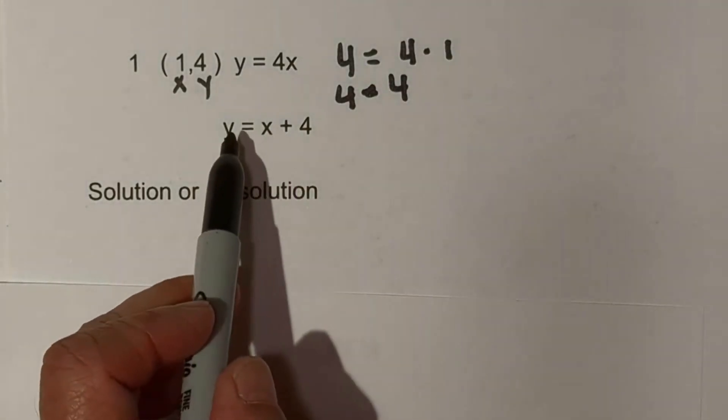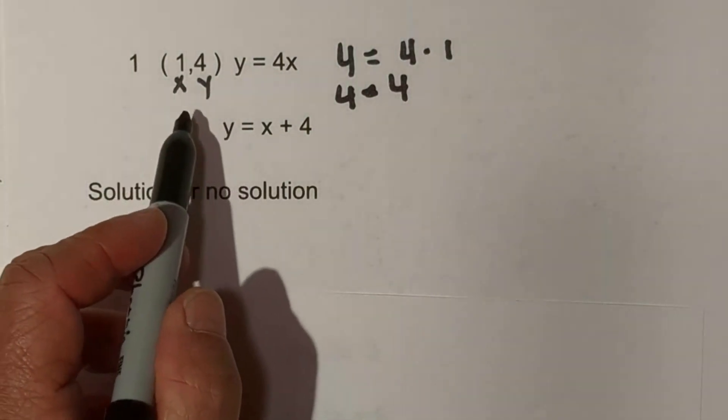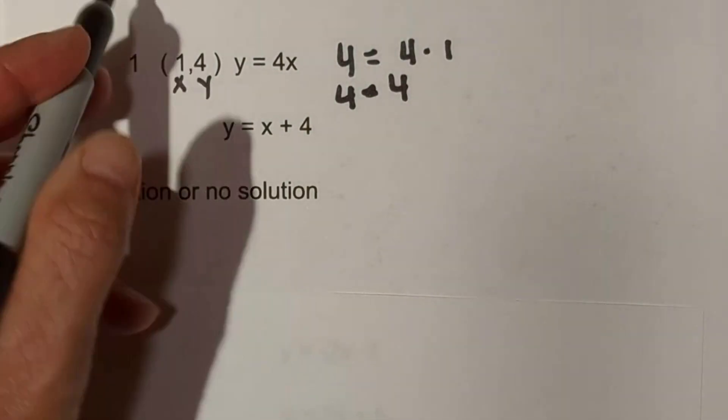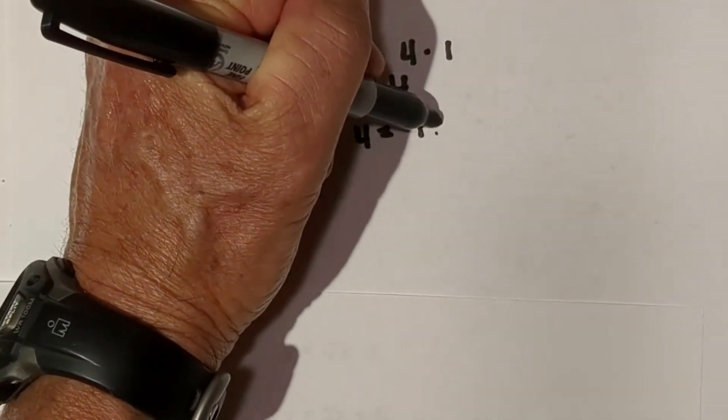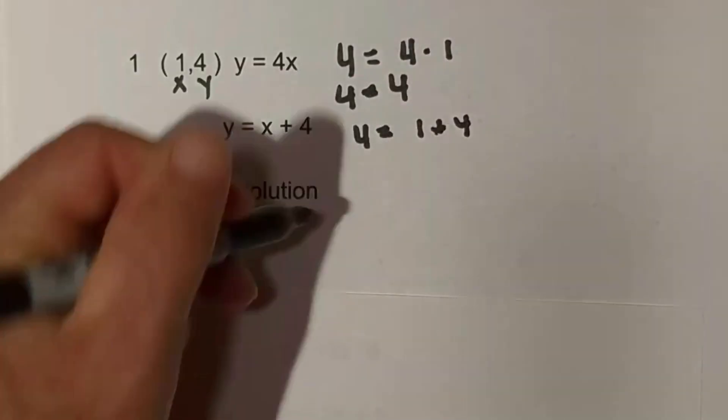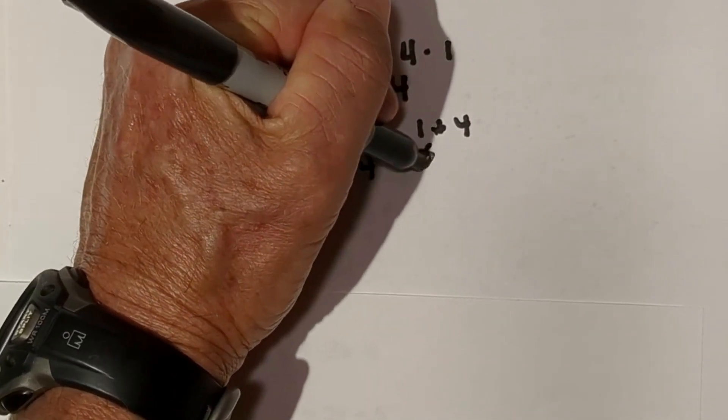Now we need to get another solution down here. We're going to do the same thing. We have 4 equals 1 plus 4. Then that becomes 4 equals 5.